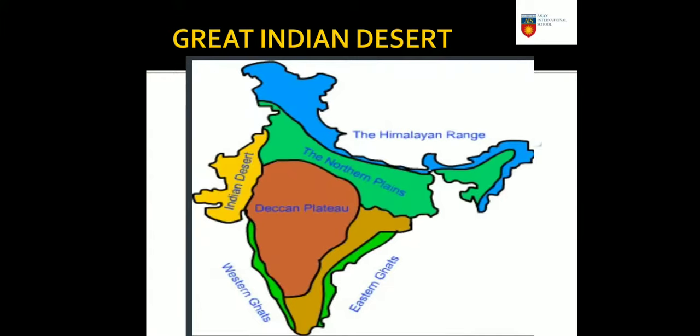In this slide you can see the different landforms of India: the northern mountains, the northern plains, the Great Indian Desert, the southern plateau, and the coastal plains. You have already learned about the northern mountains and the northern plains in the previous chapters.